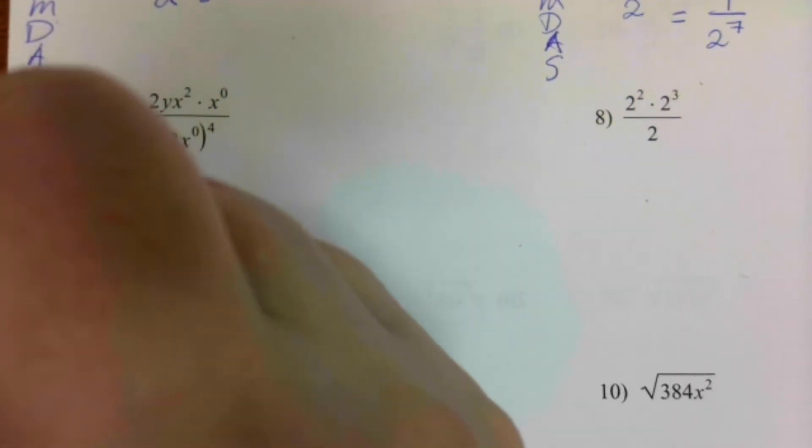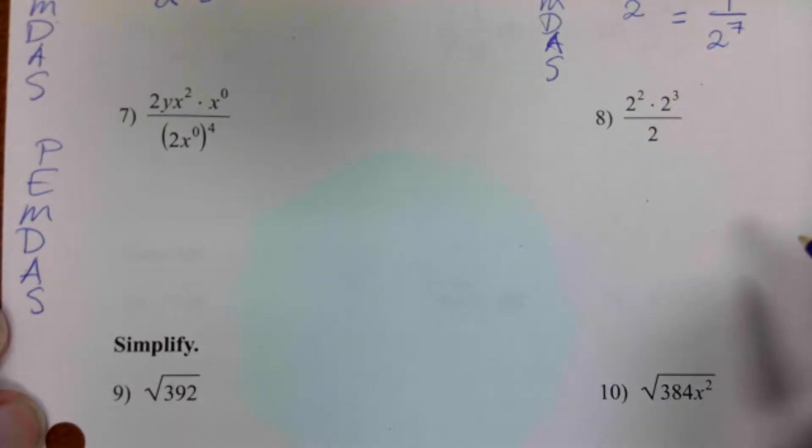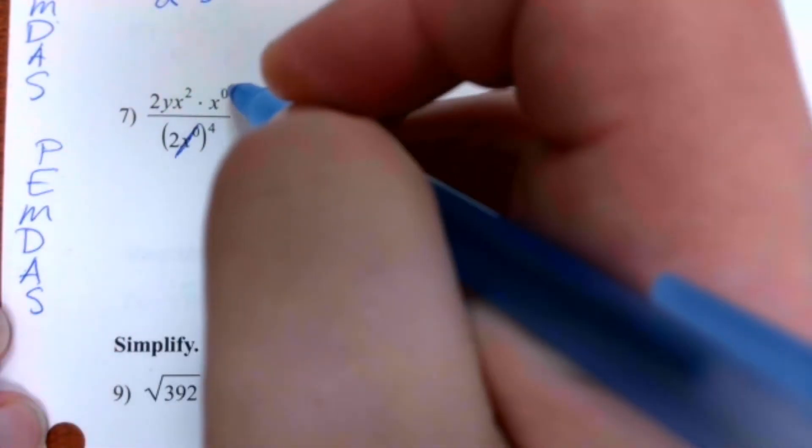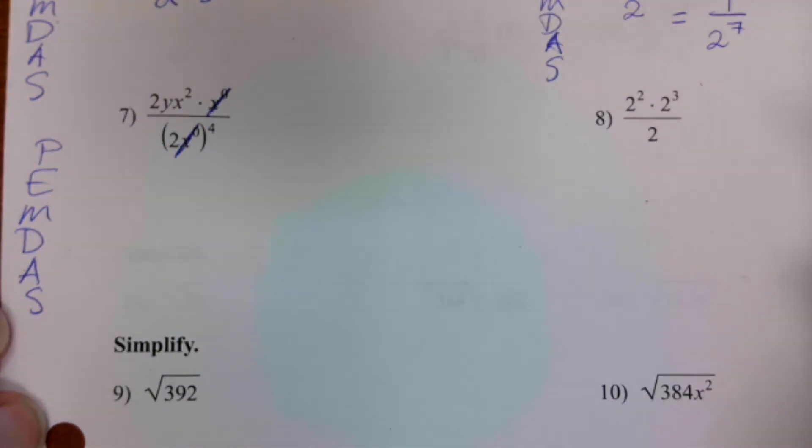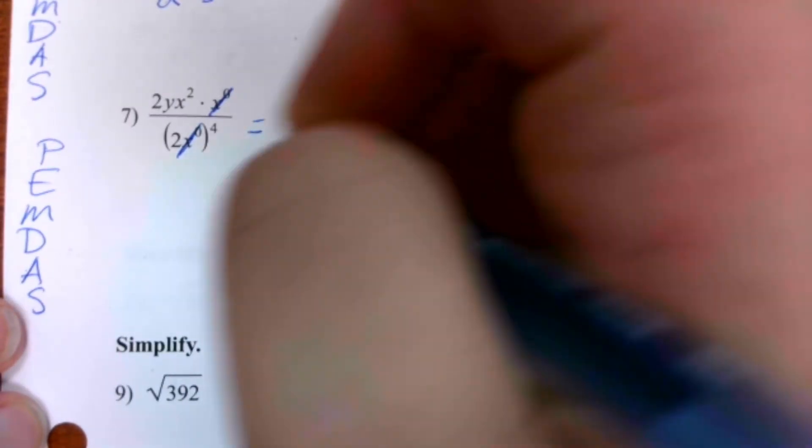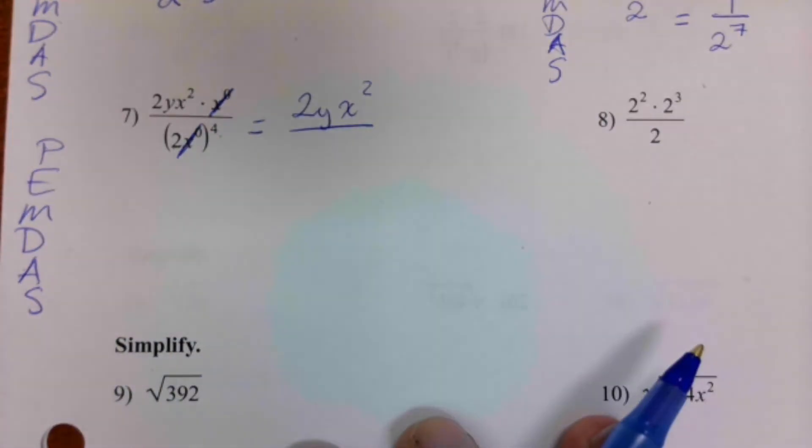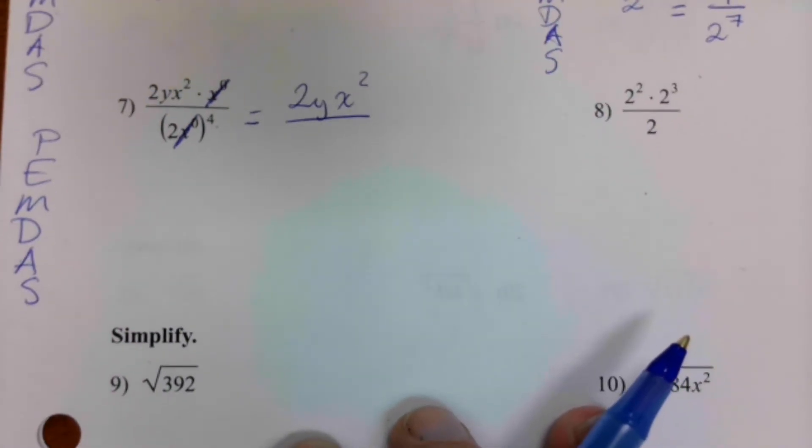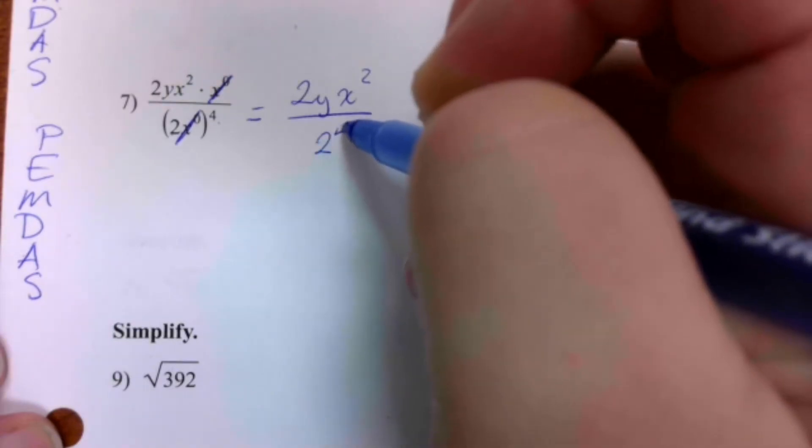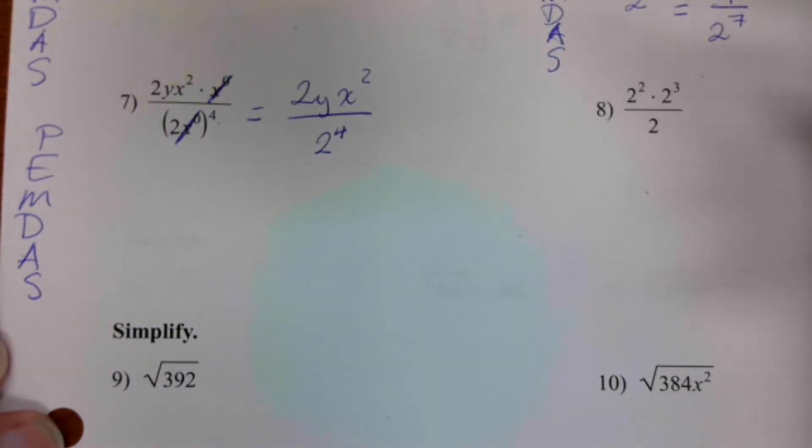Again, I'm going to use PEMDAS. Inside the parentheses, nothing I can do. So I'm going to simplify all these zeros. Anything to the zero power just cancels out. And then I'm going to have two y x squared over two to the fourth. We're basically done.